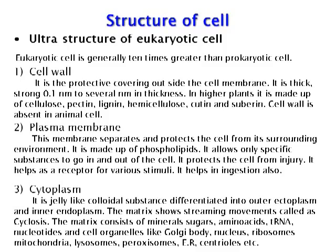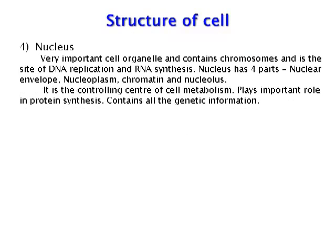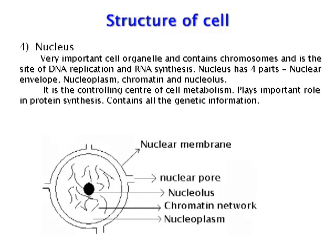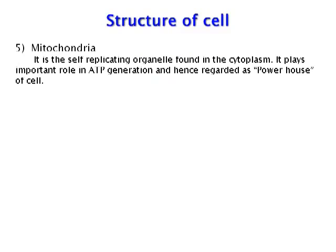The cytoplasmic matrix consists of minerals, tRNA, nucleotides, and cell organelles like Golgi body, nucleus, ribosomes, mitochondria, lysosomes, peroxisomes, endoplasmic reticulum, centrioles, etc. Nucleus is a very important cell organelle that contains chromosomes; it is the site of DNA replication and RNA synthesis. It has four parts: nuclear envelope, nucleoplasm, chromatin, and nucleolus. It is the controlling center of cell metabolism, plays an important role in protein synthesis, and contains all the genetic information.